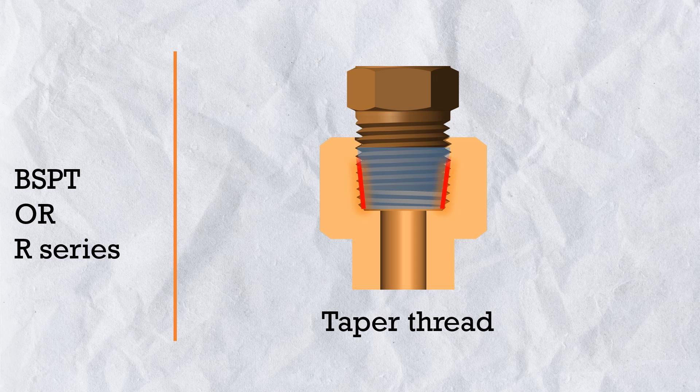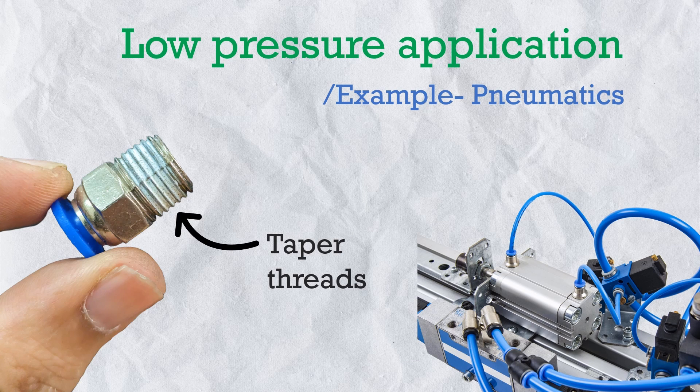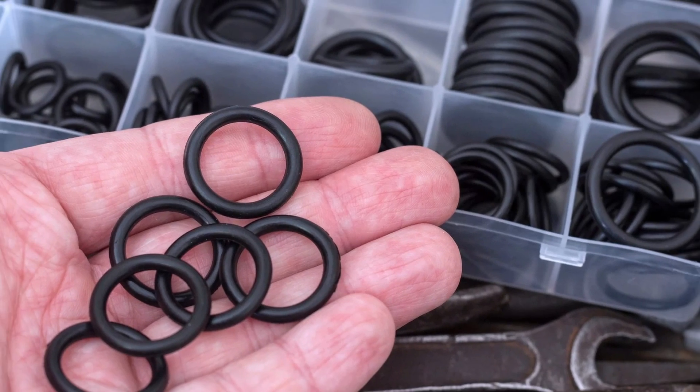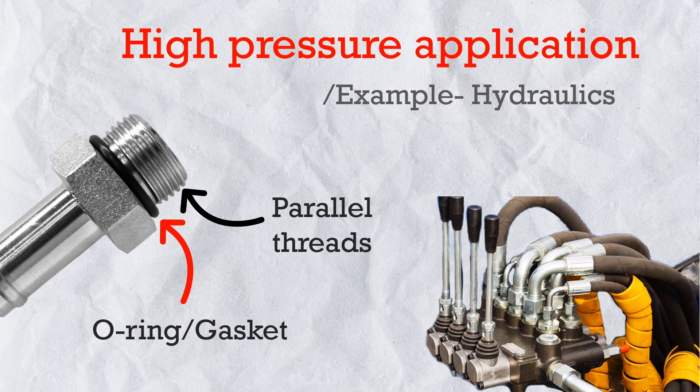If you have worked in hydraulics, you may wonder why we rarely see tapered threads in hydraulic fittings. Since R thread is a sealed tapered thread, why don't we use it? Why do we use BSPP parallel thread with O-ring or gasket instead? Here is the reason: taper thread seals the connection through thread interlocking and the sealing tape over the thread. Because of that, for low-pressure applications like pneumatics, taper threads are better since we don't need extra sealing elements like O-rings or gaskets. But in high-pressure applications, we cannot trust the sealing capacity of taper thread interlocking alone, so we always prefer parallel thread with proper sealing elements like an O-ring or gasket.